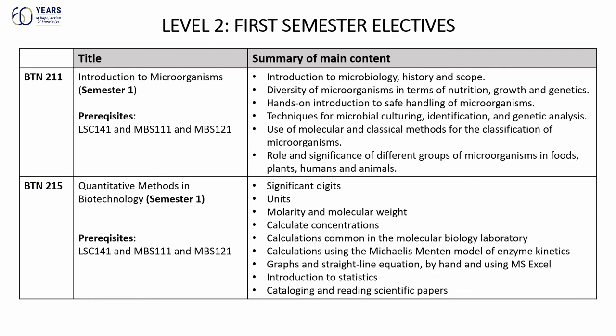At level 2, all electives are from the Department of Biotechnology. Students choose in the first semester from either BTN 211 or BTN 215. BTN 211 is Introduction to Microorganisms and covers a lot about microorganisms — starting from history, the techniques, and more. Everything you need to know about microorganisms is covered at the introductory level, so most students who are interested in microbiology go for that module.